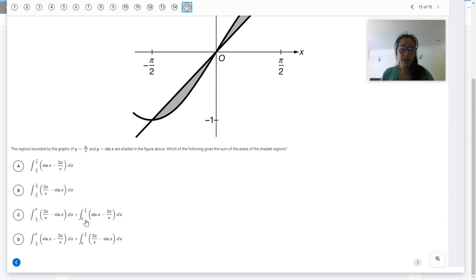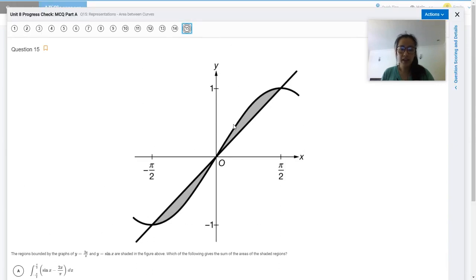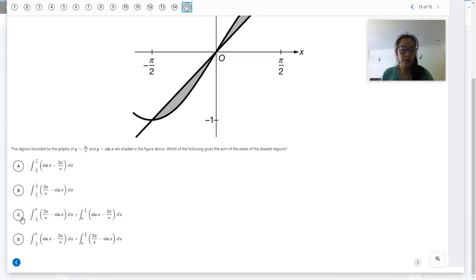And then plus on the right side, it should be the top curve is sine of x and then minus the line, which is 2x over pi, from zero to pi over two. And that would be answer choice C.